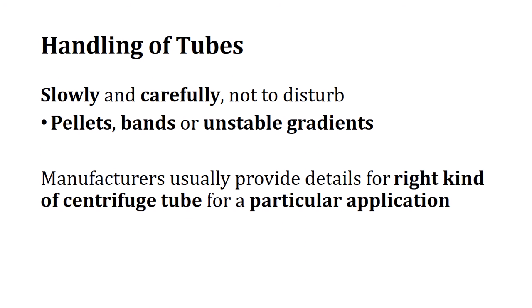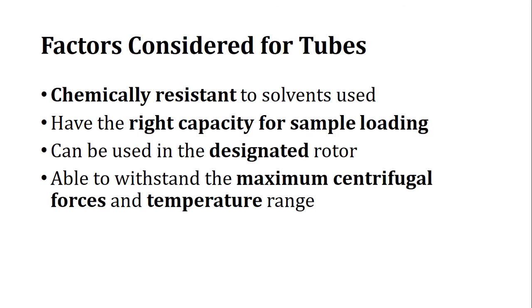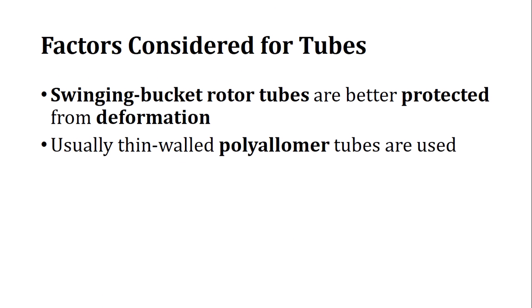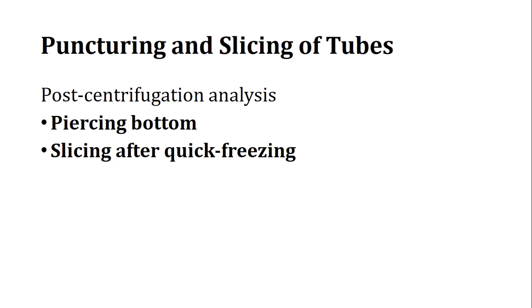Manufacturers usually provide details for the right kind of centrifuge tube for a particular application and those instructions should be followed. Key factors for tube selection include: chemical resistance to solvents used, right capacity for sample loading, compatibility with designated rotors, and ability to withstand the maximum centrifugal force and temperature ranges. Thick-walled tubes in a fixed angle rotor at high RCF can collapse. Swinging bucket rotor tubes are better protected from deformation; thin-walled polyallomer tubes are typically used for swinging bucket rotors.